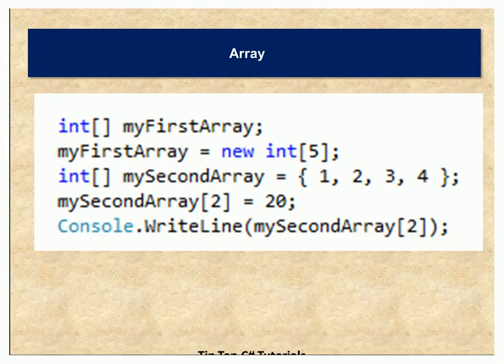The first one we are going to explain is array. As you see the sample code here, we declare an integer array with the square bracket syntax, and how you initialize an array is with the syntax: myFirstArray equal to new int[5]. With this statement we are defining an array with a fixed size, specified in the declaration itself. There is another way to initialize an array by giving the number of elements, as specified in mySecondArray.